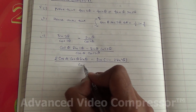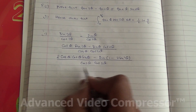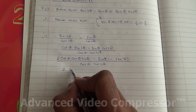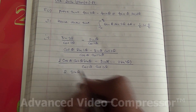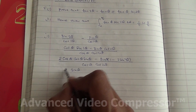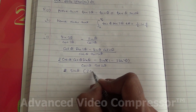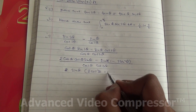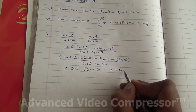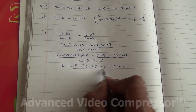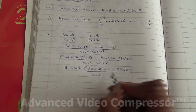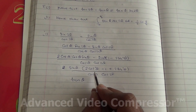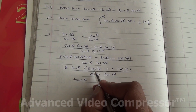So we've got 2sin(θ), and 2 times cos(θ) times cos(θ) is 2cos²(θ). Then minus sin(θ) times (1 minus 2sin²(θ)), which gives minus sin(θ) plus 2sin³(θ), all divided by cos(θ) times cos(2θ). The sin(θ) over cos(θ) gives tan(θ), so here we get 2cos²(θ).